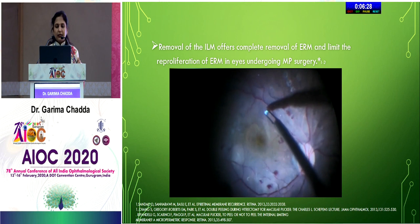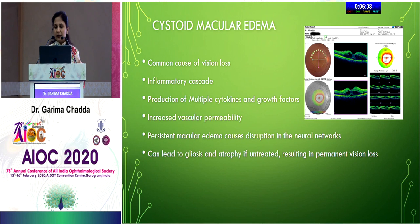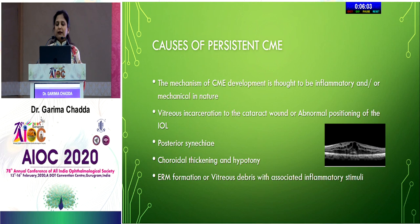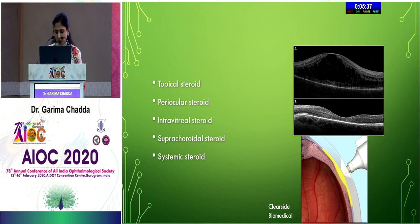Cystoid macular edema is a common cause of vision loss. The inflammatory cascade produces multiple cytokines and growth factors increasing vascular permeability. Persistent macular edema can cause neural network disruption, gliosis, and atrophy leading to permanent vision loss. Persistent CME can also occur with vitreous incarceration at the cataract wound, abnormal IOL positioning, posterior synechia, choroidal thickening and hypotony, ERM, and vitreous debris. Few patients respond to steroids; steroid side effects must be watched carefully, and the infective component must be resolved first.